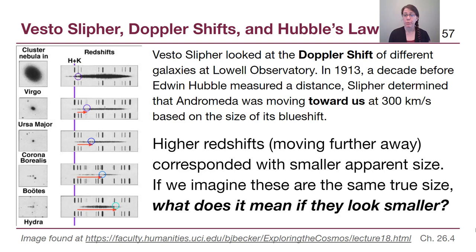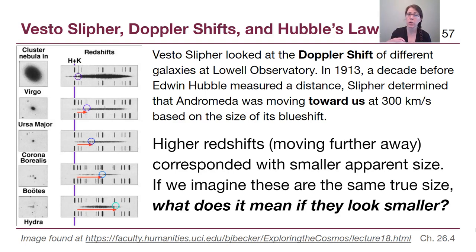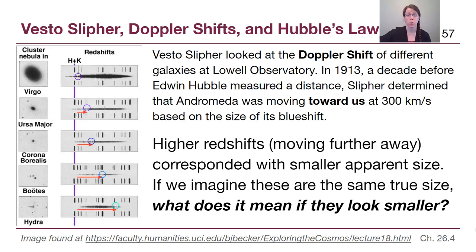Higher redshifts corresponded with smaller apparent size. If we imagine that several objects are all the same true size, objects that look smaller to us are farther away — just like cars parked near our window look bigger and cars at the edge of our vision look smaller. So what Slipher started to find is that for these galaxies, the farther away they were, the faster they appeared to be moving away from us.